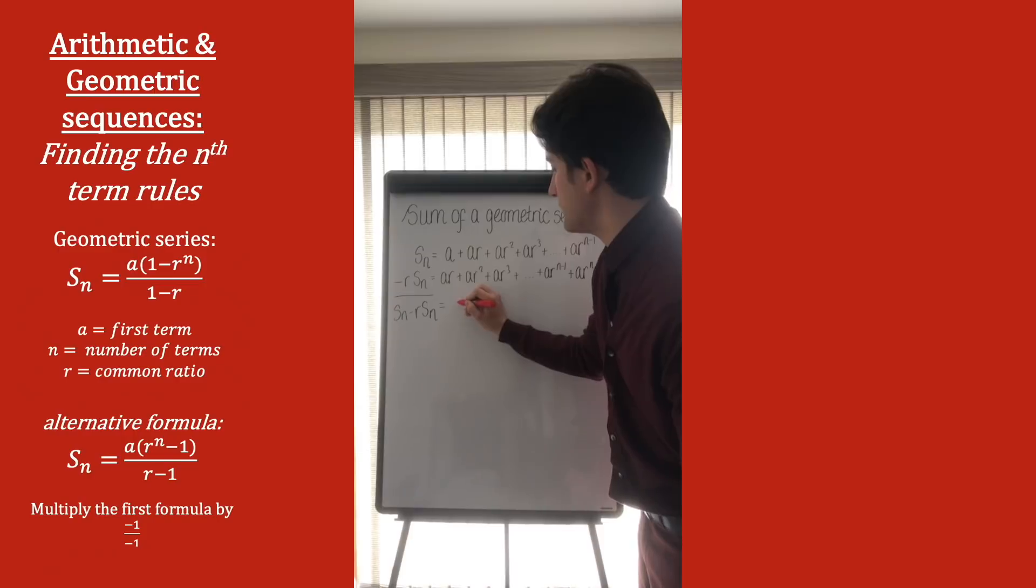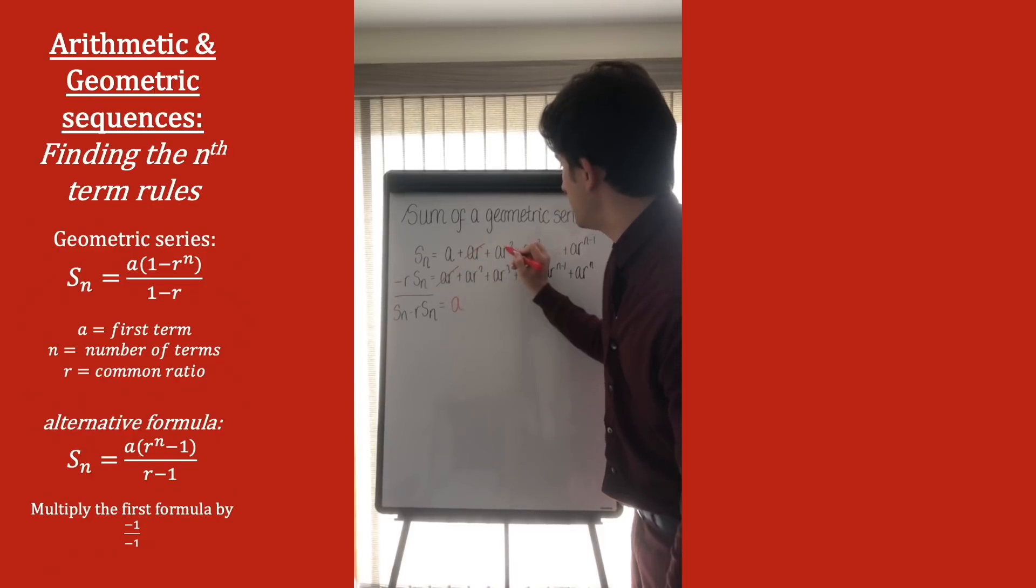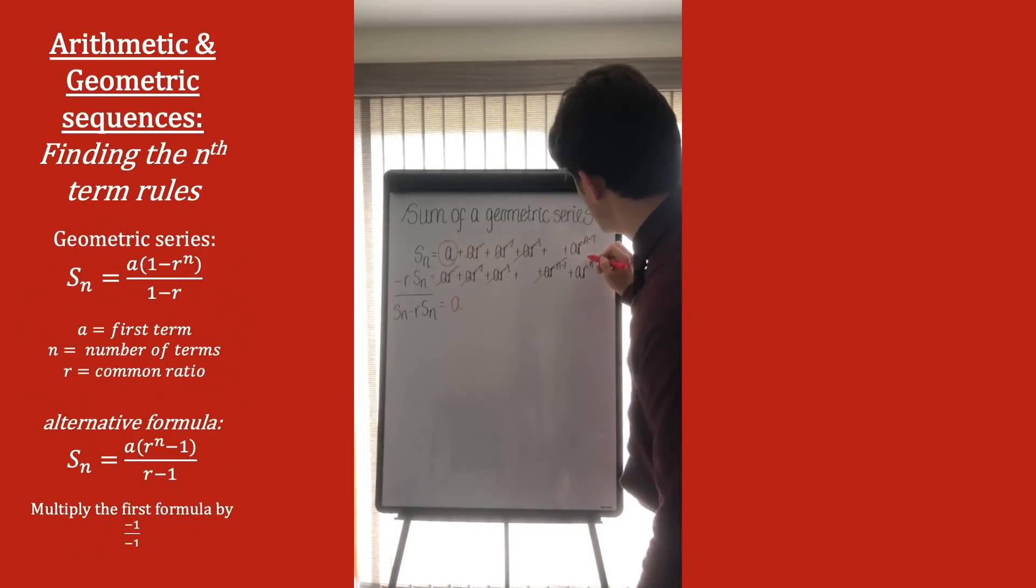And by subtracting these terms, a is left as it is, ar and ar will cancel each other, ar squared and ar squared will cancel each other, and so on, leaving us with a, and ar to the n.